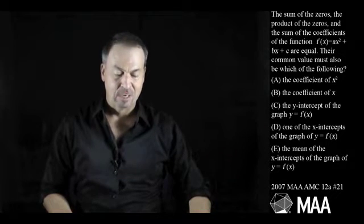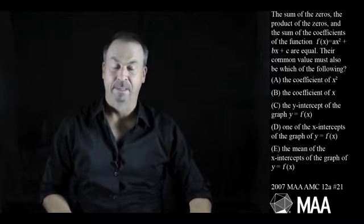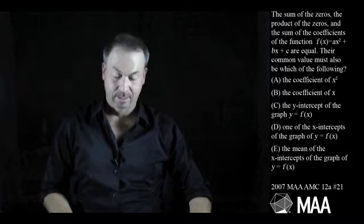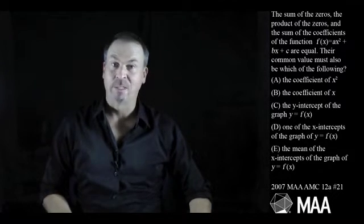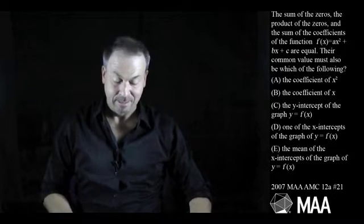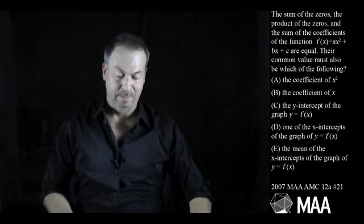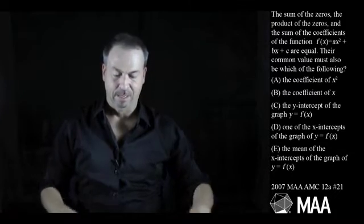Their common value must also be which of the following? And we've got some choices: A, the coefficient of x squared, B, the coefficient of x, C, the y-intercept of the graph y equals f of x, D, the x-intercept of the graph y equals f of x, or E, the mean of the x-intercepts of the graph of y equals f of x. Gosh.